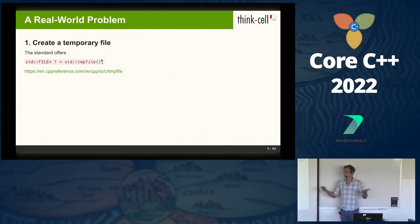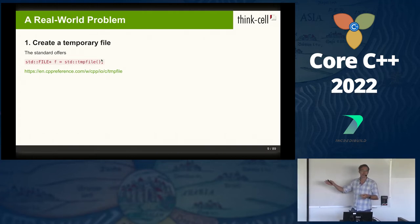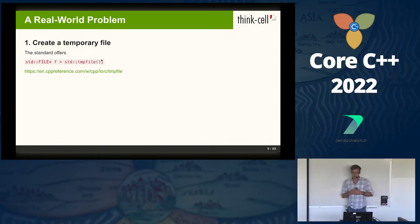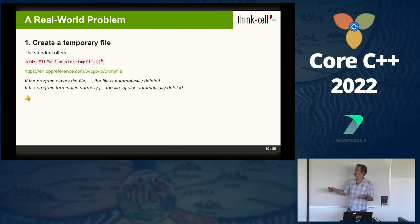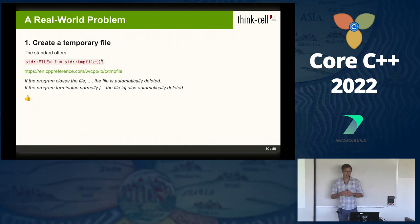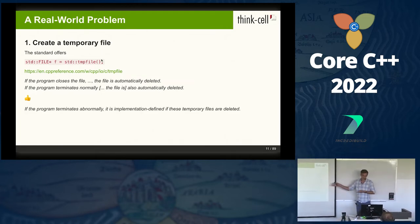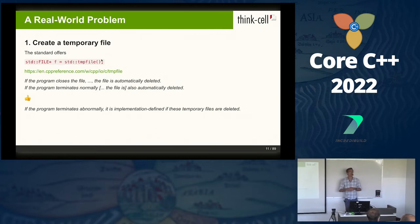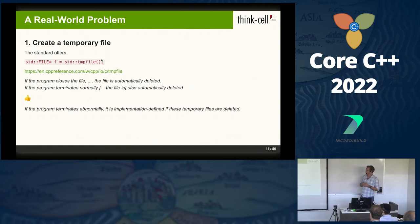The beginning is pretty simple — we have to create a temporary file, and the standard is there for us. It provides a cross-platform standardized interface: std::tmpfile, which helpfully gives us a std::FILE pointer already. It gives good guarantees: if the program closes the file, it will be automatically deleted from disk. Even when we terminate the program with std::exit, the file will also be automatically deleted — we're not cluttering the user's disk. What happens if our program crashes is platform-dependent and implementation-defined, but maybe that's good enough for now.